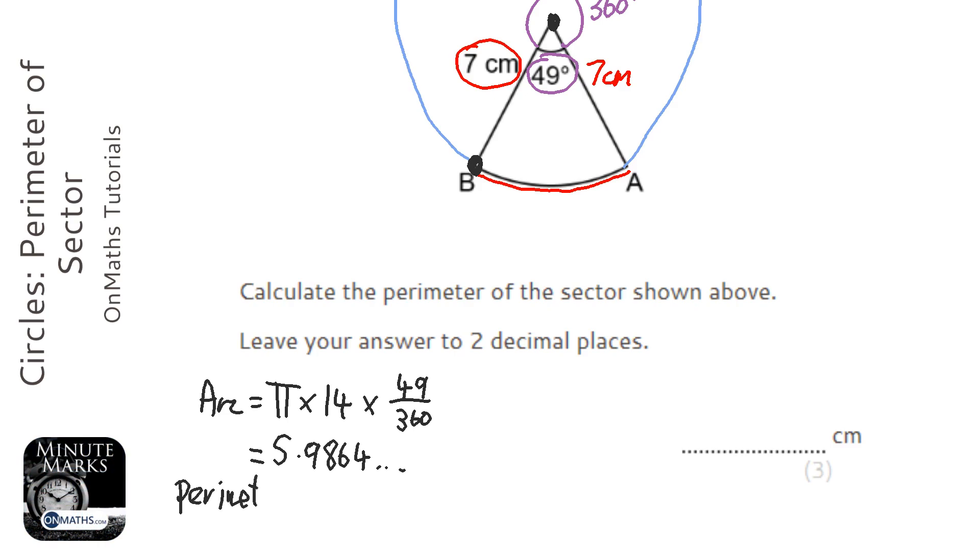Because, as I said at the start, to get the perimeter, I need to add that 5.9864 to the 7 and the other 7, and that will give me the full perimeter.